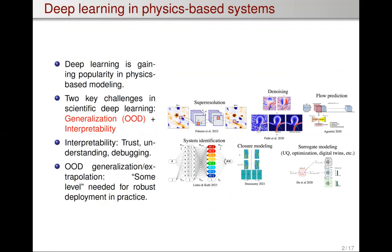There are two key challenges in scientific deep learning. One is generalization to out-of-distribution data, or really extrapolation, and the other one is lack of interpretability. Interpretability is really important because it provides trust in our model, helps us get a better understanding of the system we are studying, and also helps us debug our model in a more rigorous fashion as opposed to just trial and error.